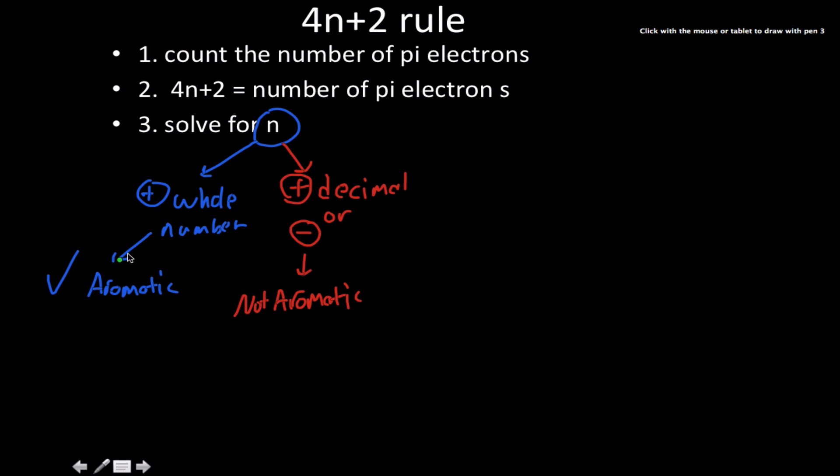If it's a positive whole number, then yeah, you've got an aromatic compound. If it's a positive decimal or not a whole number or a negative value that is a whole number, it's not aromatic.